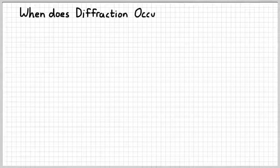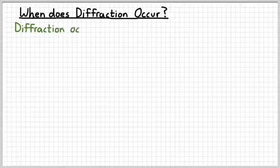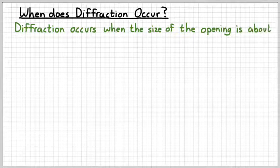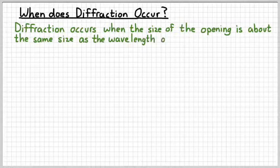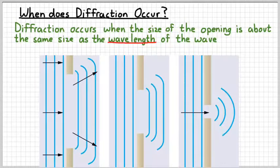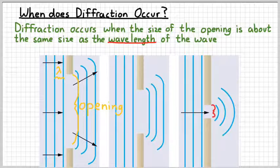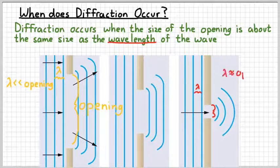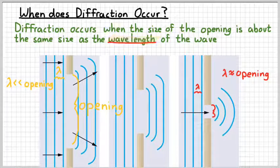The next question is: when does diffraction occur? It doesn't always occur for every wave and every opening. Diffraction occurs if the size of the opening is about the same size as the wavelength of the wave. The picture on the left has an opening much larger than the wavelength, so you don't see a real spherical pattern — just a little bit of bending around the edges, with the middle still basically straight. Whereas on the right, the wavelength is about the same size as the opening, and we get a good spherical diffraction pattern.